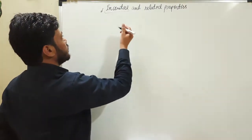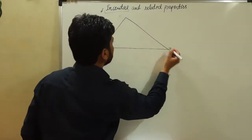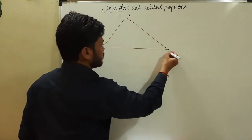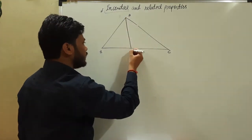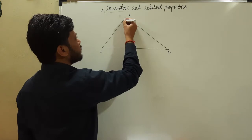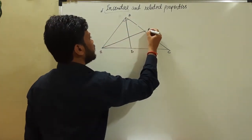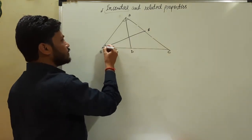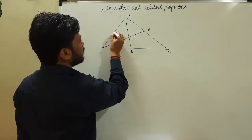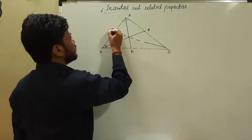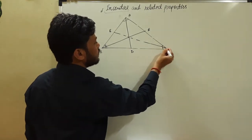Let us understand it by drawing a figure. Suppose this is a triangle A, B and C. Line AD is the angle bisector of angle A. Similarly, line BE is the angle bisector of angle B. In the same way, line CF is the angle bisector of angle C.